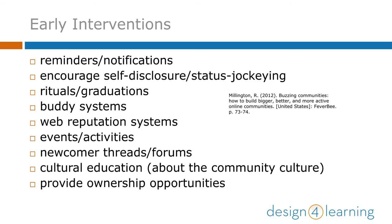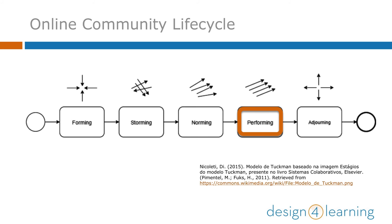Millington lists these activities as some early interventions to keep your initial contributors active and encourage others to join in. You may want to choose a few of these as activities for your online learning community in its early days. Then, once you've gotten to that performing stage, how do you stay there? Here's where your plans for assessment come in. You need a plan to continually assess your strategy, goals, systems for assessment, and reward systems, and revise them as needed for continued improvement and growth.